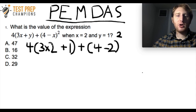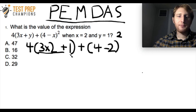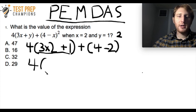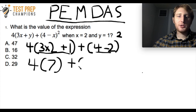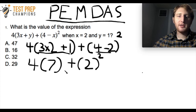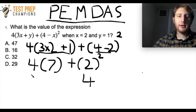We start by solving what's inside the parentheses first. For 3×2 + 1: 3 times 2 is 6, plus 1 gives us 7. So we can rewrite that as 4×7. Then for the other parenthesis, 4 minus 2 equals 2. So we now have 4×7 + 2². We've handled the parentheses; next we look at the exponent. 2 squared is 4.